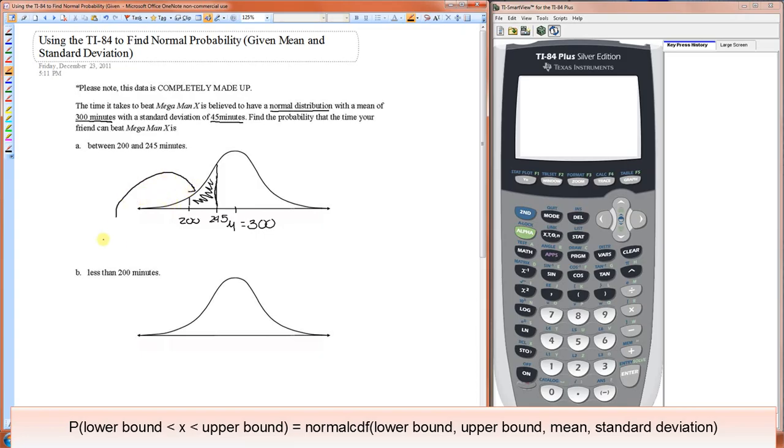That area represents the probability that X is between 200 and 245, where X represents the time that it takes to beat Mega Man X.